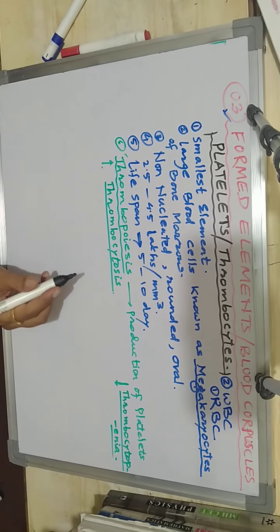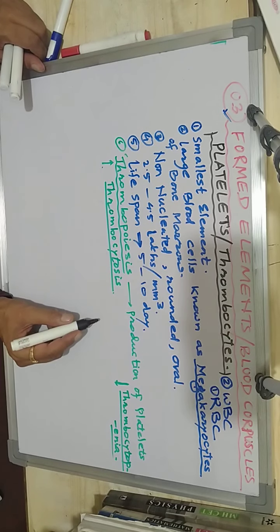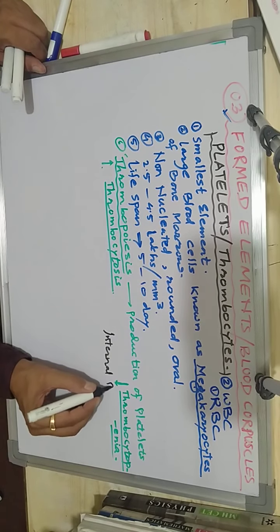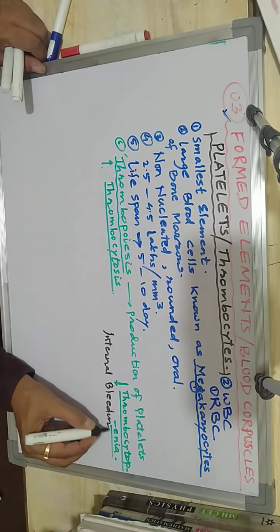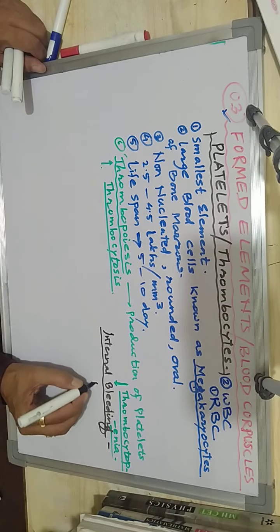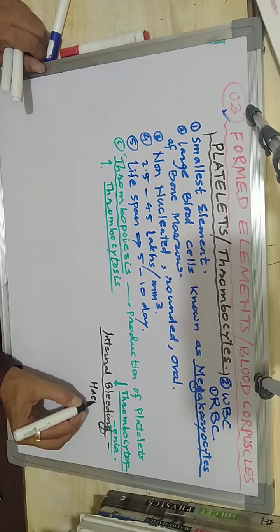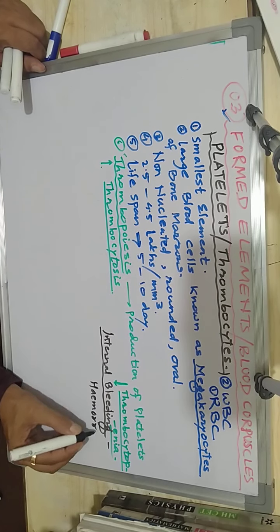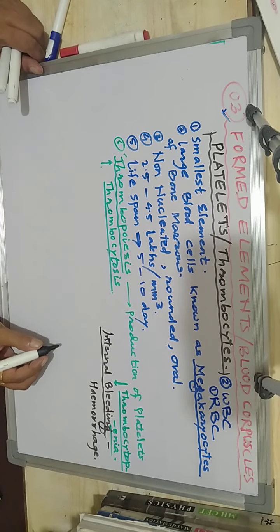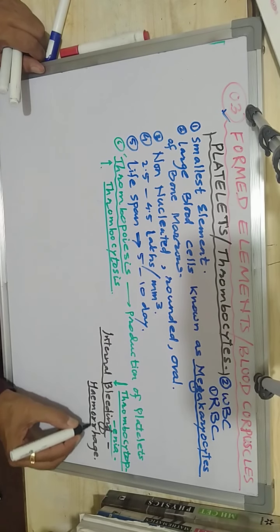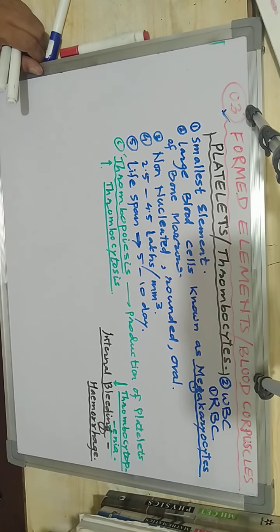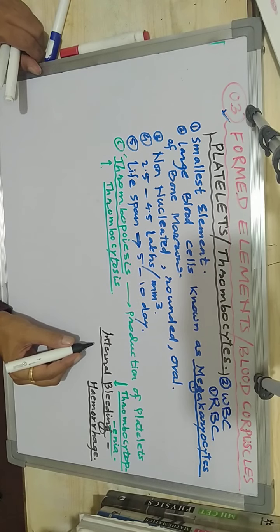If there is a decrease in number of platelets, there are chances of internal bleeding. In that case, the biological term used is hemorrhage. This hemorrhage is a risk for that person at the site of injury.